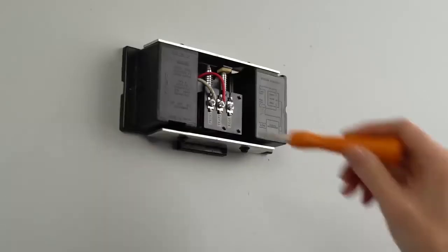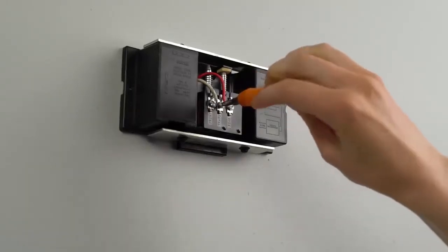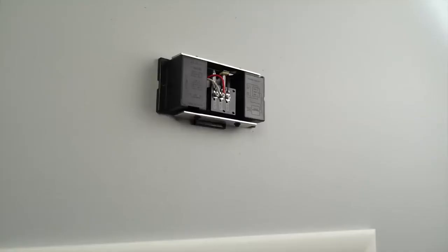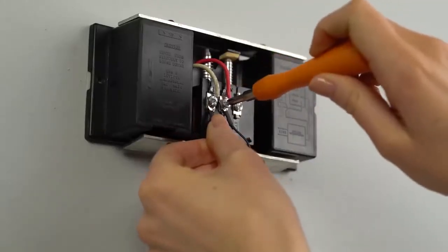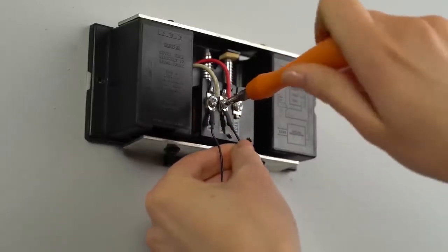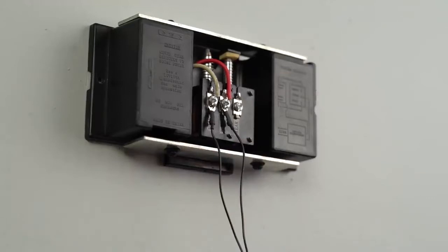Loosen the front and transformer screws using the provided screwdriver, making sure not to detach any connected wires. Then slide the two wire connectors from the Pro Power Kit under the two screws and retighten them. It doesn't matter which wire you connect to each, as long as both terminals are connected.